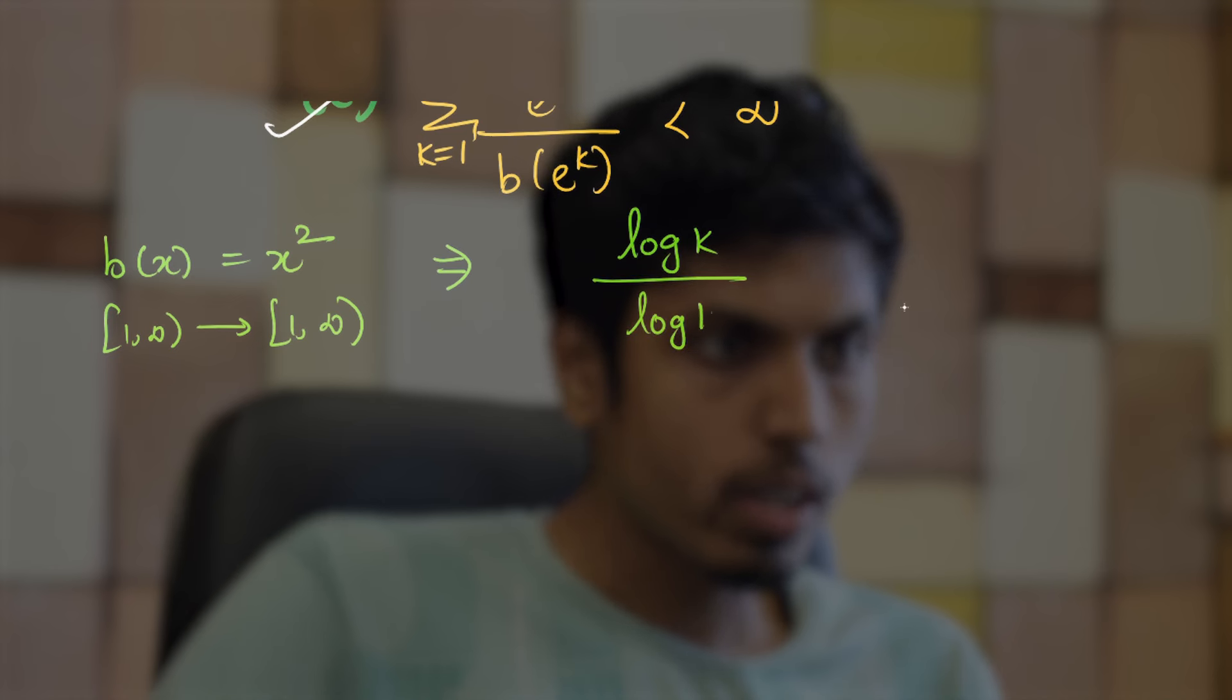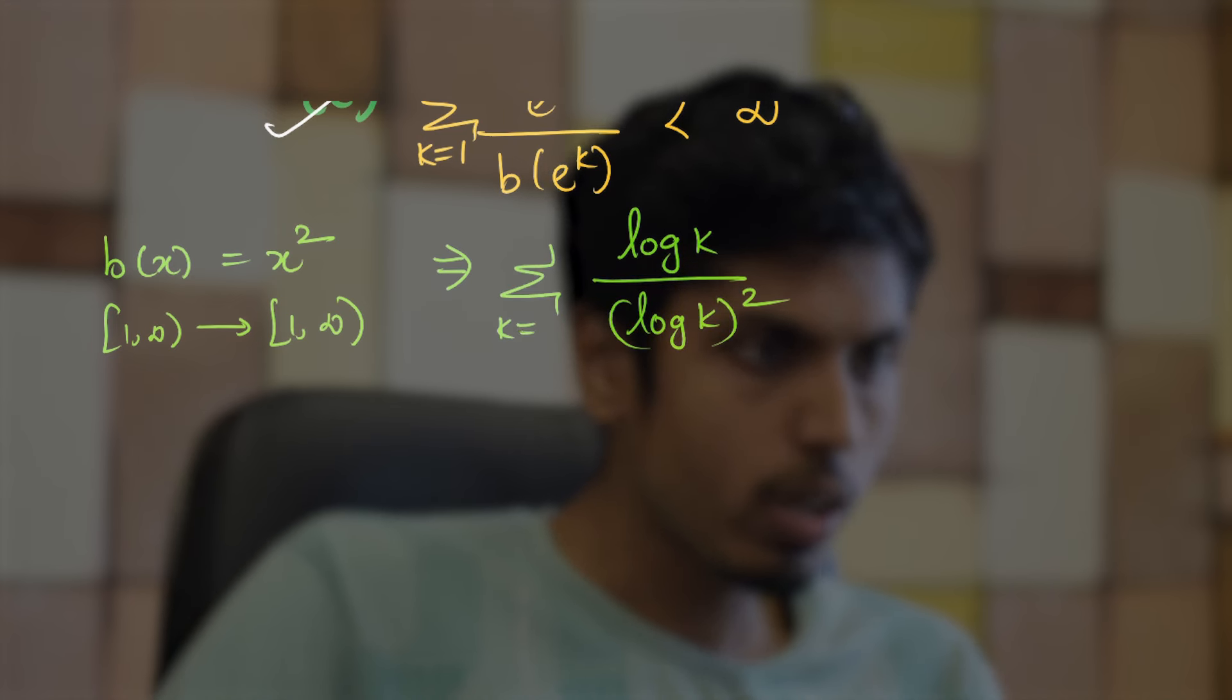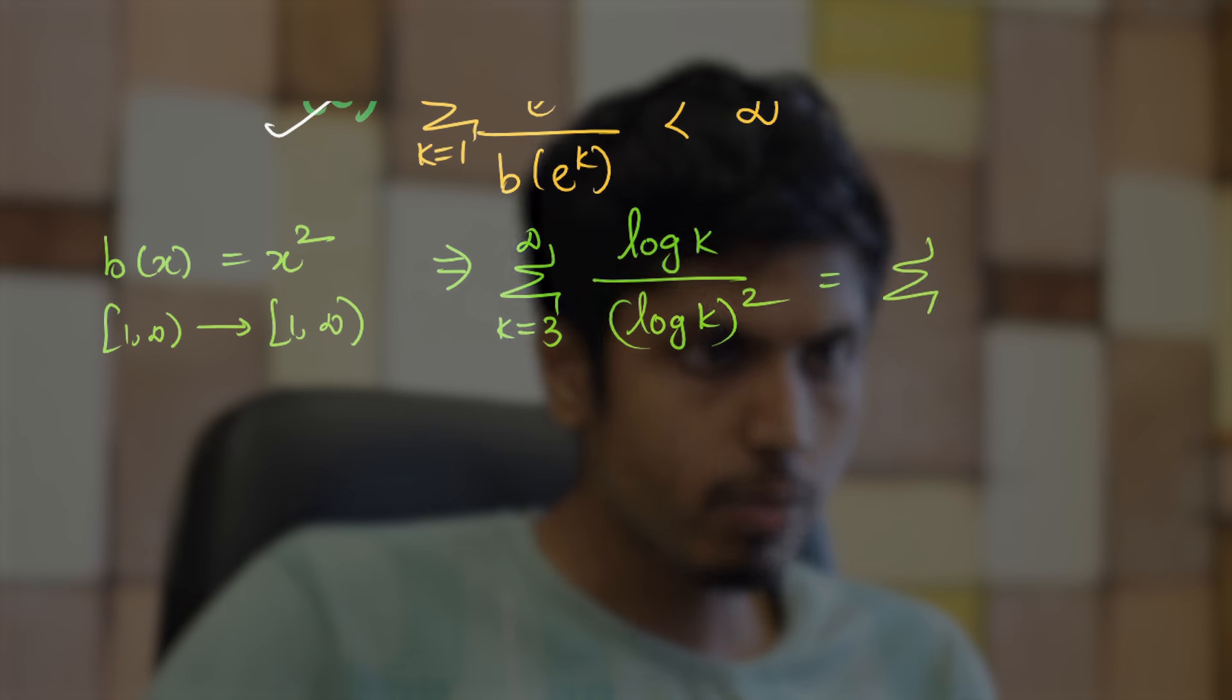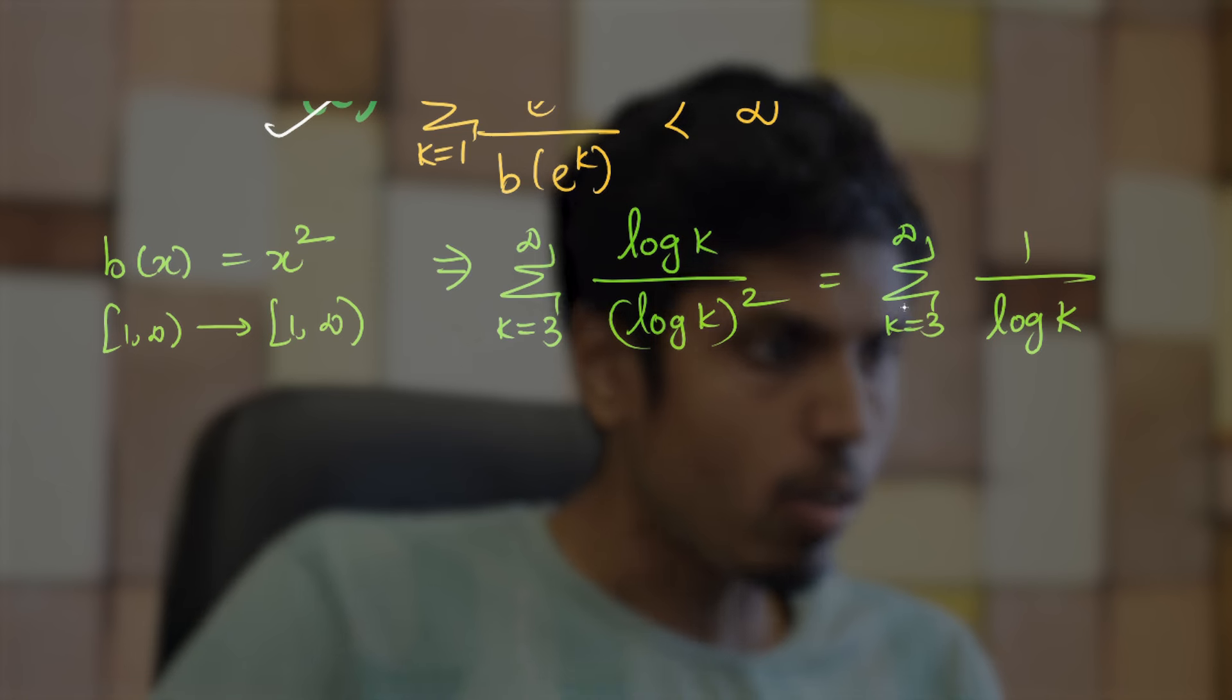This will imply option B which is log k/b(log k). So, that is log k/(log k)² summation k equal to 3 to infinity. This is summation k equal to 3 to infinity 1/log k. But notice this: x is always greater than log k. This is true for all x positive.